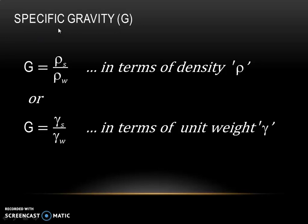Next is specific gravity. Specific gravity is the ratio of density of soil to the density of water. This formula is in terms of density, and if you want to write G in terms of unit weight, then G is equal to gamma-S divided by gamma-W, where rho-W is the density of water and gamma-W is the unit weight of water.